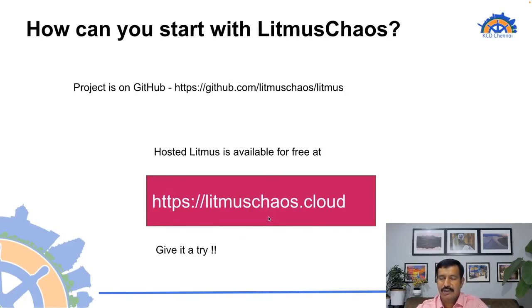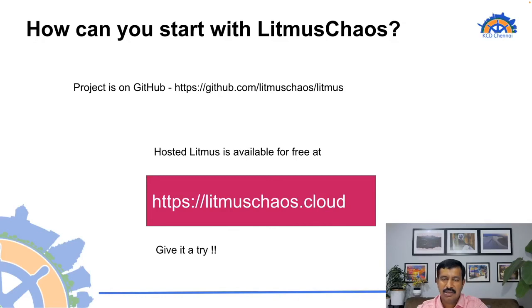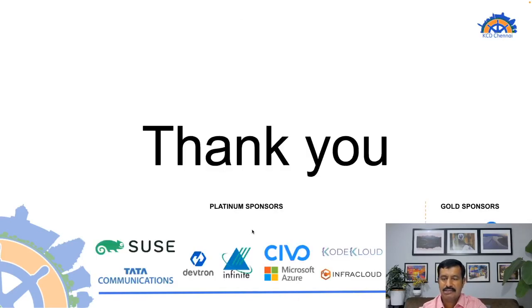That's mostly what I wanted to cover. You can use Litmus — the open source version from GitHub is very easy to start with. There's also a freely available hosted version at litmuschaos.cloud. When you sign up, you get a control plane, connect your execution plane or agent, and start running chaos. That's all I have — I can now take some Q&A.